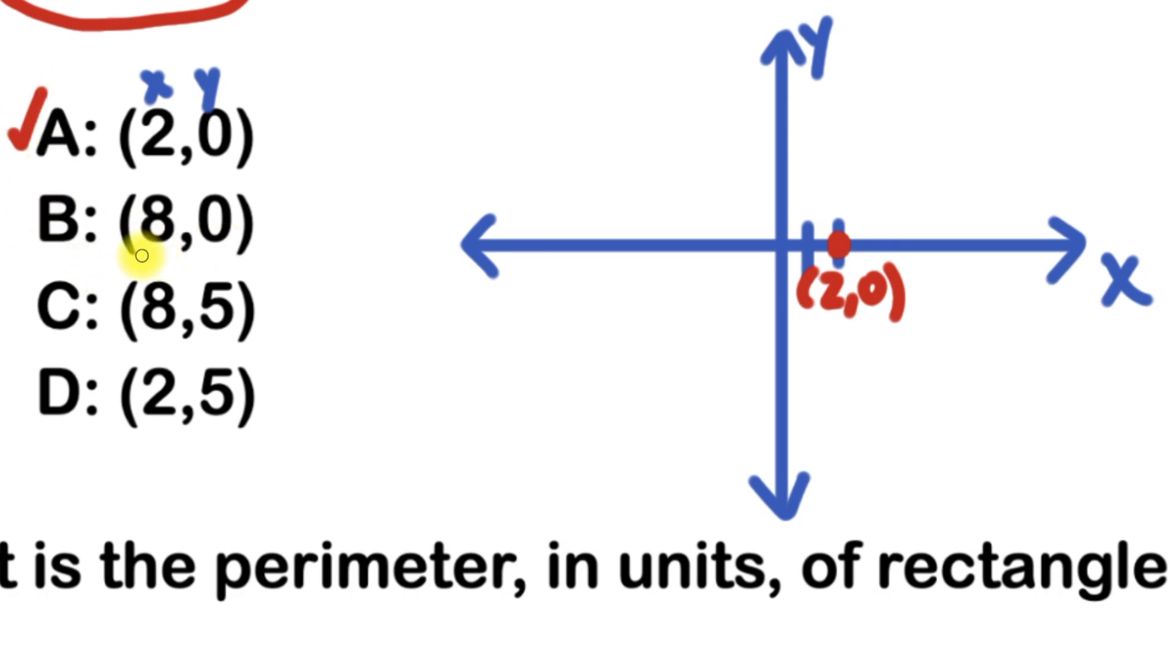Let's go to B, which is at (8,0). So if I start at the origin, which is (0,0), the first movement will be to the right. 1, 2, 3, 4, 5, 6, 7, 8. And now I'll plot this point here at (8,0). So we're done with this one.